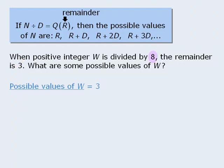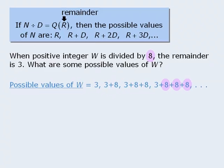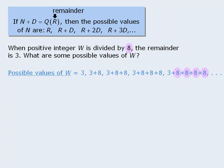Next, since we're dividing by 8, this is the divisor. So to find other possible values of w, we'll add multiples of 8 to the remainder of 3. So the next possible value of w is 3 plus 1×8, then 3 plus 2×8, then 3 plus 3×8, then 3 plus 4×8, and so on. When we evaluate these, we get the following as possible values of w.